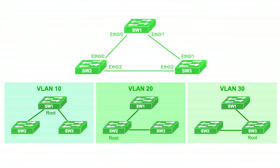Once the root is chosen, switches prefer faster paths back to it. Slower paths are avoided, and anything that would cause a loop gets blocked. And remember, in most Cisco networks, this happens per VLAN — each VLAN builds its own spanning tree. That is huge, because it means you can intentionally split VLANs across different paths and actually use your redundant links instead of leaving bandwidth idle.